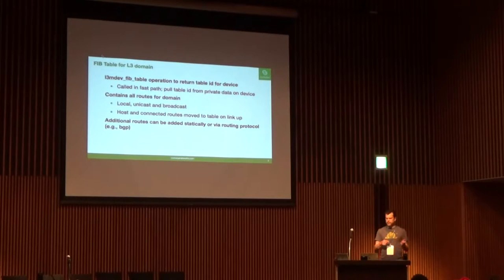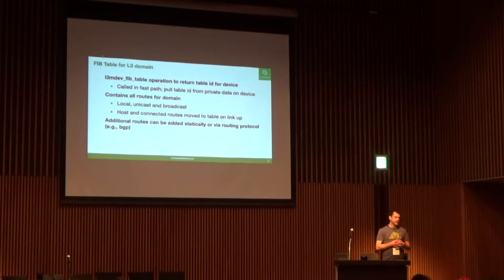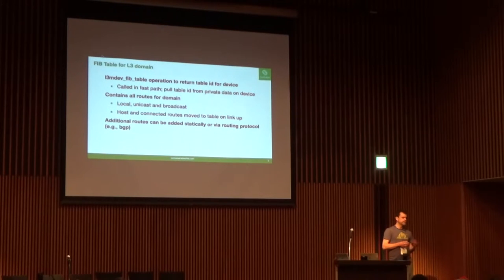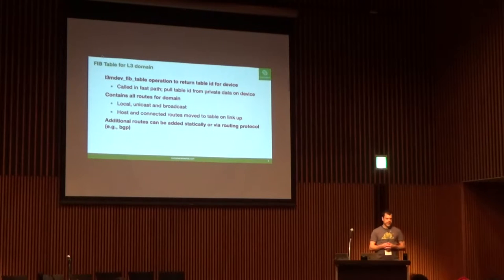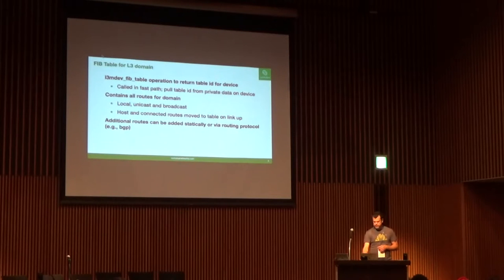Host and connected routes are moved to that table when the link is brought up. Additional routes can be added to any one of those FIB tables using BGP or by statically adding routes. You put them into that FIB table and they become part of that L3 domain's lookup.